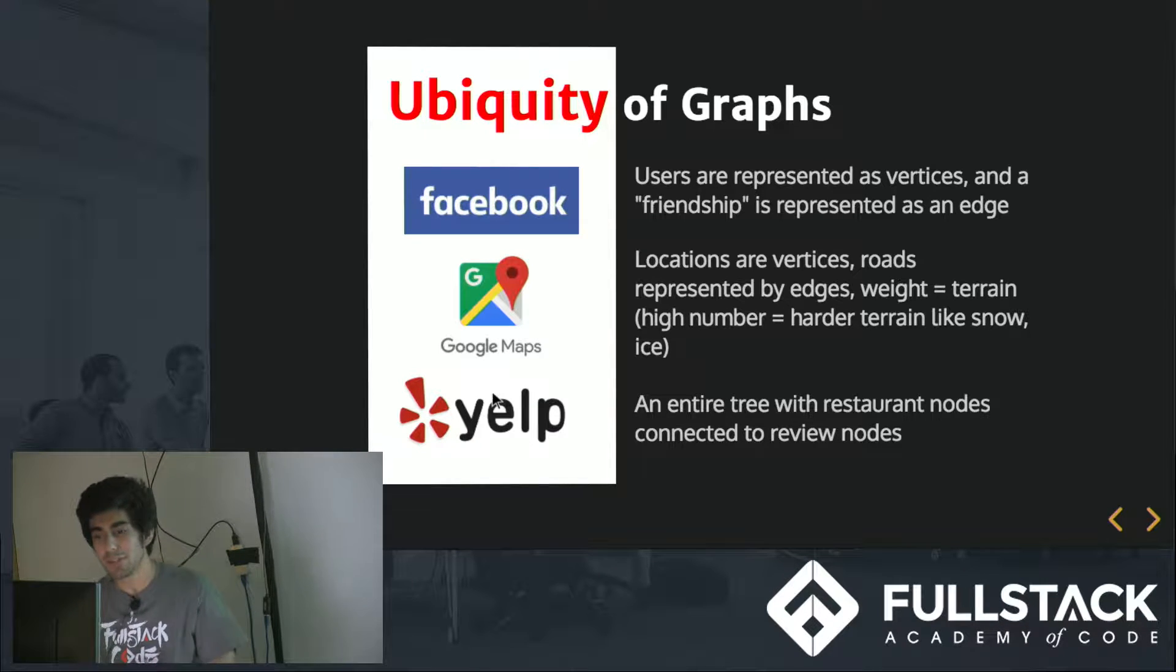For Google Maps, locations are represented as vertices, roads are represented by edges, and the graphs are actually weighted graphs because when you want to go from one place to another, you have to account for terrain. So maybe a weight of four might be snowing or traffic, while a weight of one might just be an empty road.